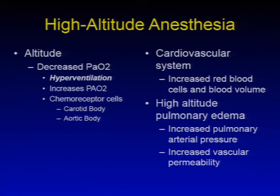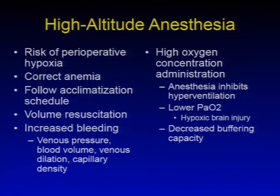High-altitude pulmonary edema may occur, which involves increased pulmonary arterial pressure and increased vascular permeability. With high-altitude anesthesia, there is a risk of perioperative hypoxia. The goal would be to correct any anemias and follow an acclimatization schedule to ensure the patient has had adequate time to adjust to high altitude. Volume resuscitation may be necessary, and the patient may also have increased bleeding due to venous pressure, blood volume, venous dilation, and capillary density.